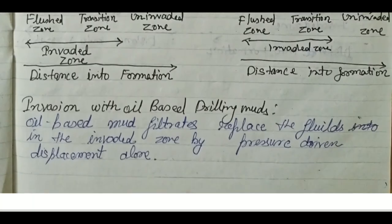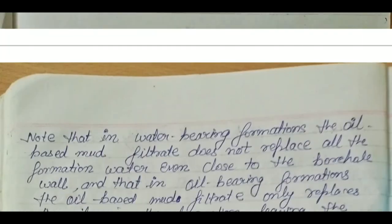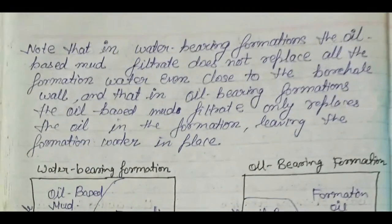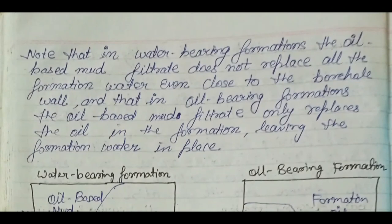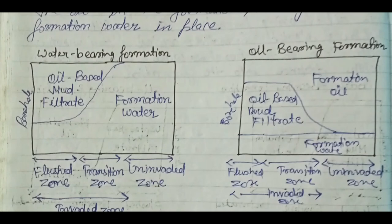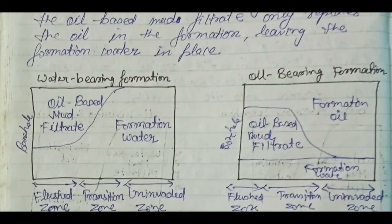When using oil-based mud, the mud filtrate replaces fluids in the invaded zone by pressure drive and displacement alone. In a water-bearing formation, the oil-based mud filtrate does not replace all the formation water even close to the borehole — formation water is still left in the flush zone and in the invaded zone.